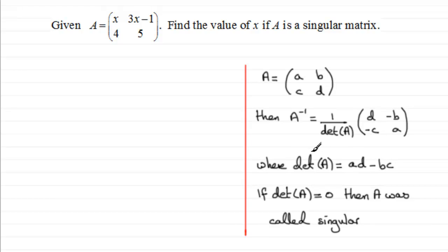And that determinant of the matrix A was given by ad minus bc, the product of the leading diagonal minus the product of the trailing diagonal.